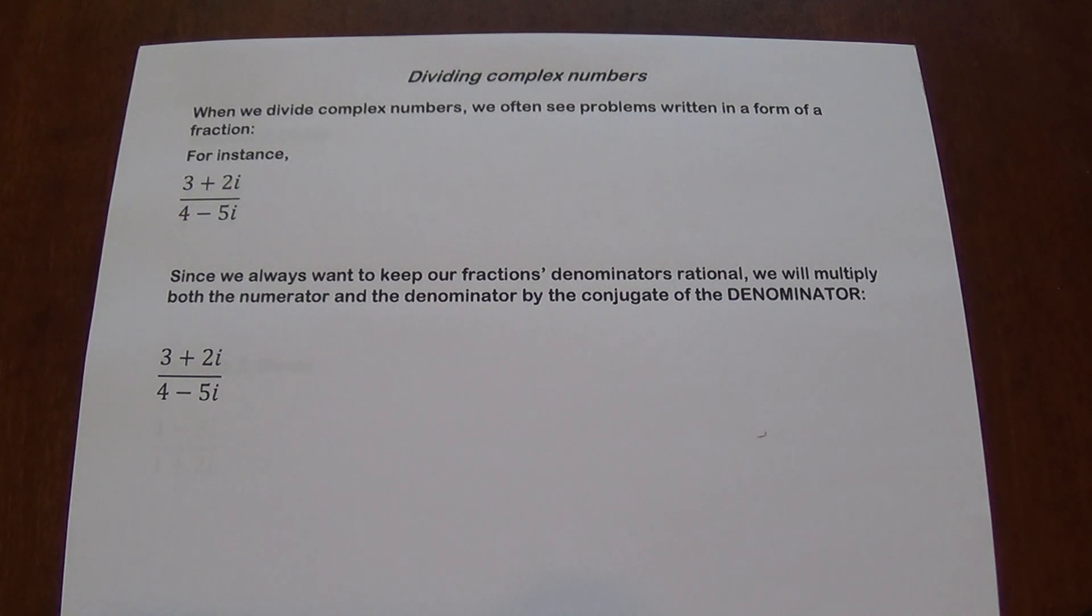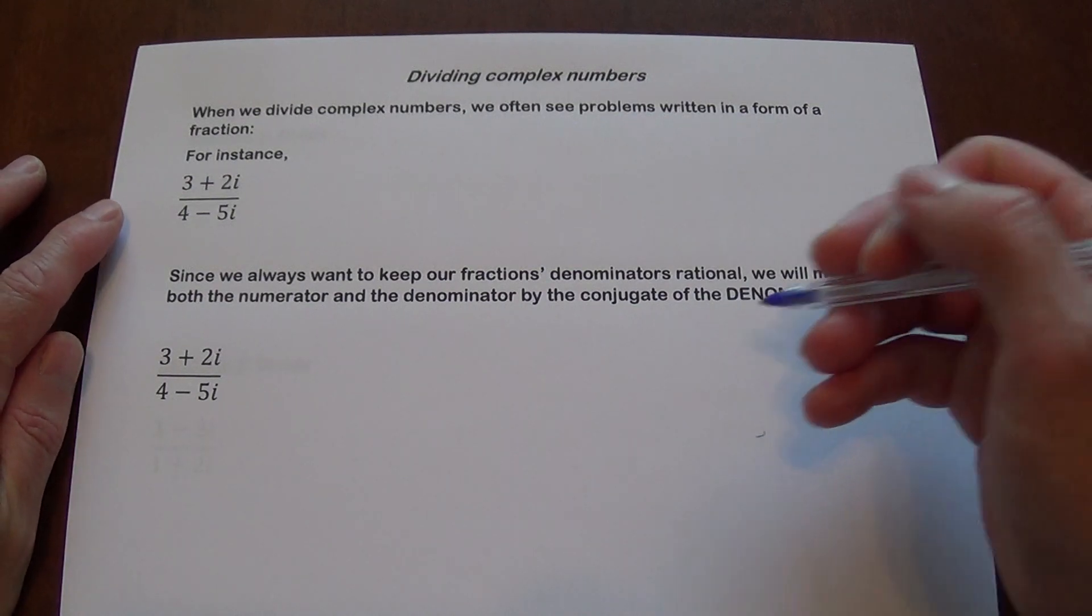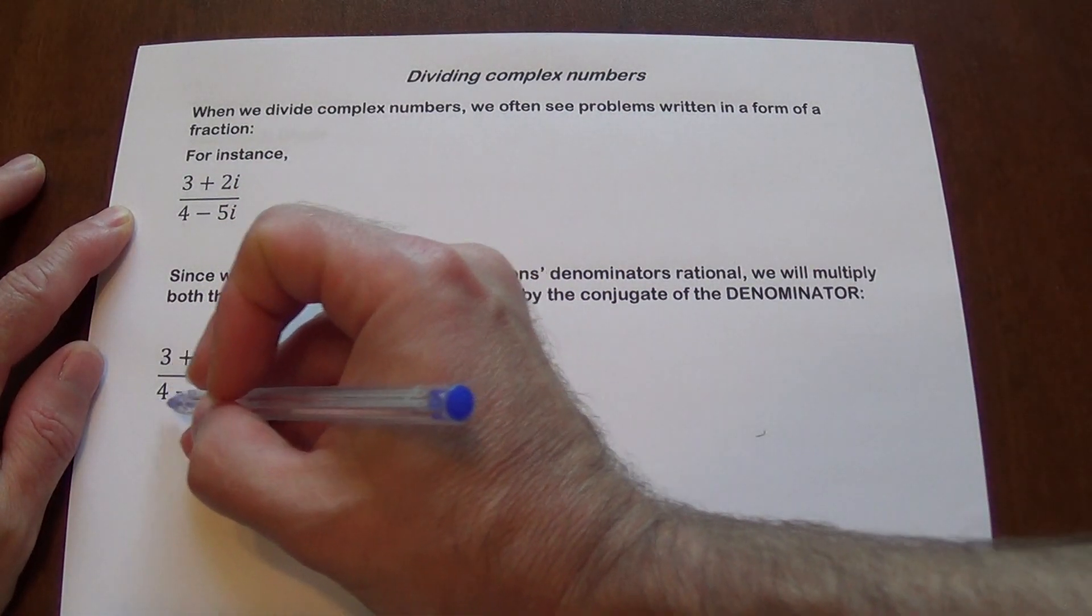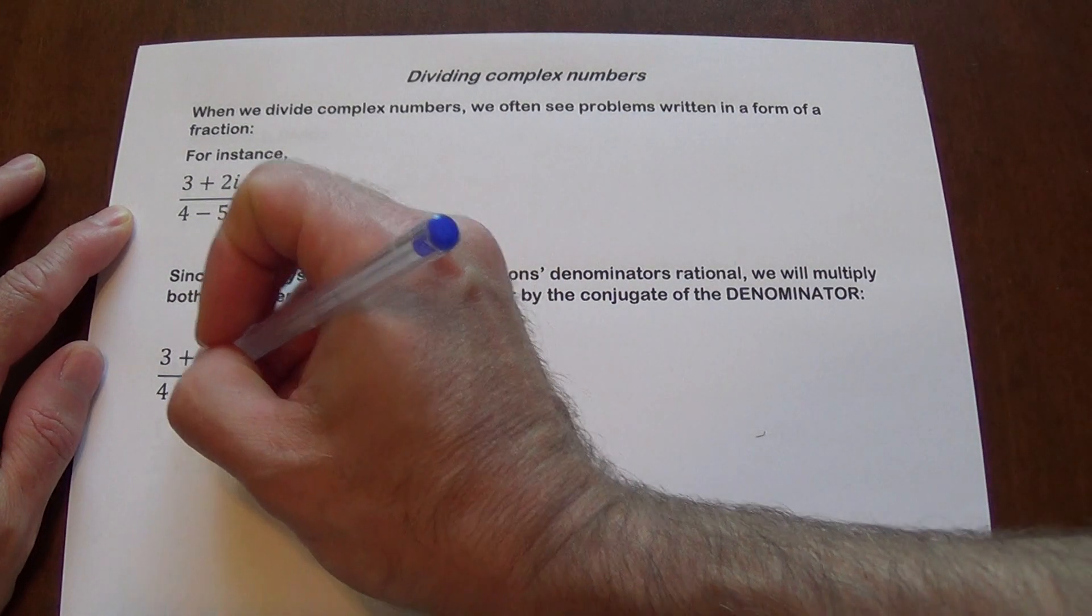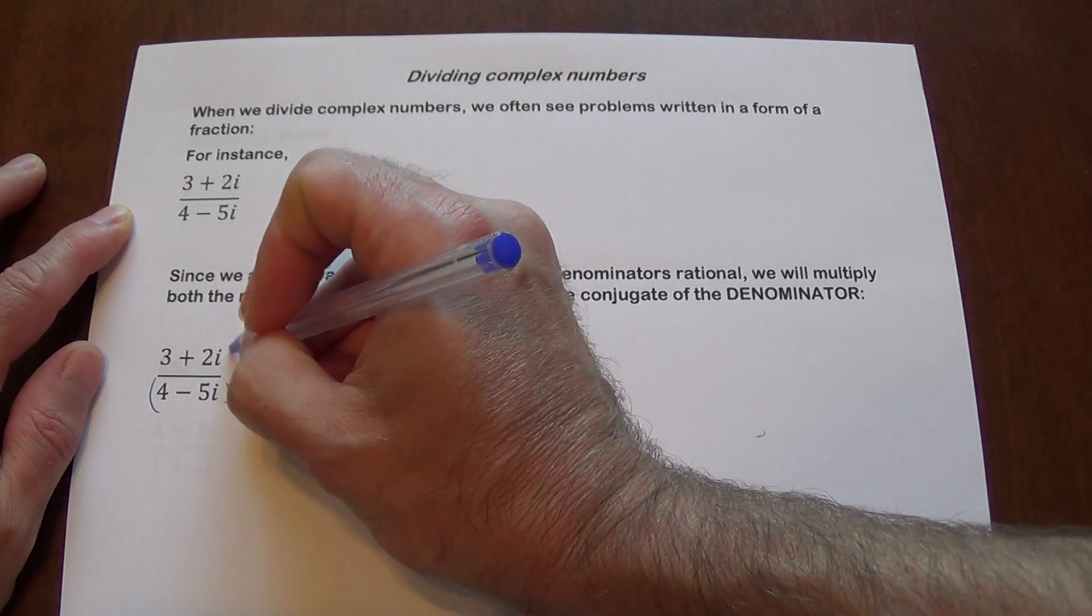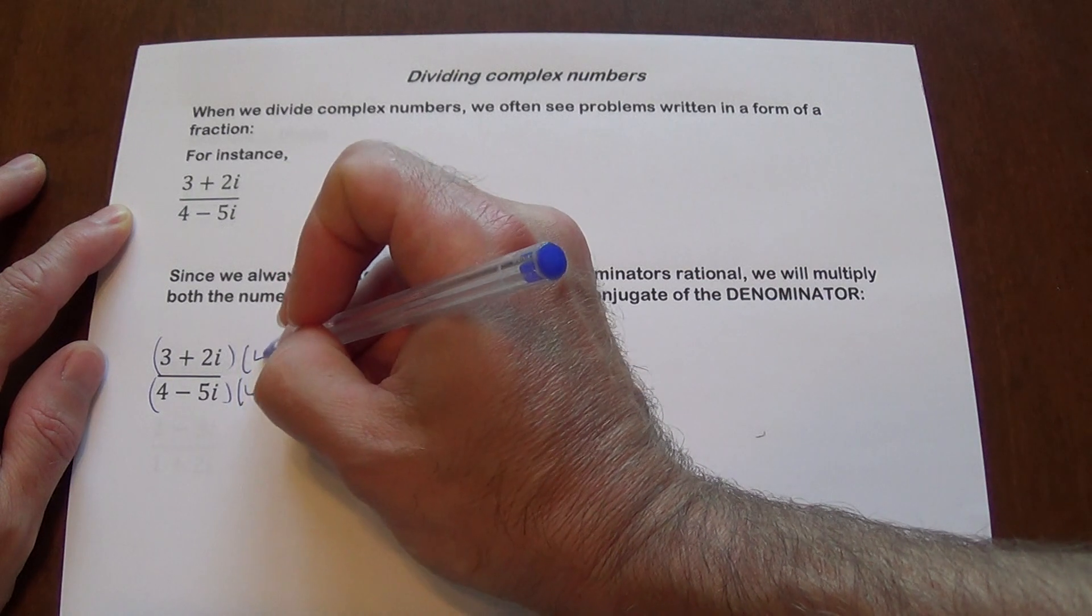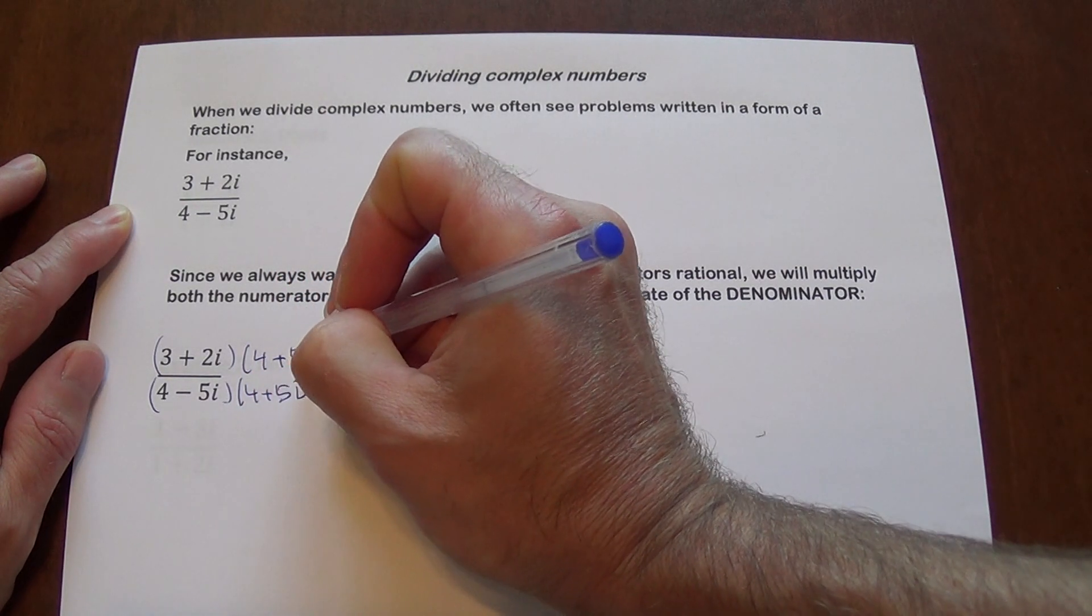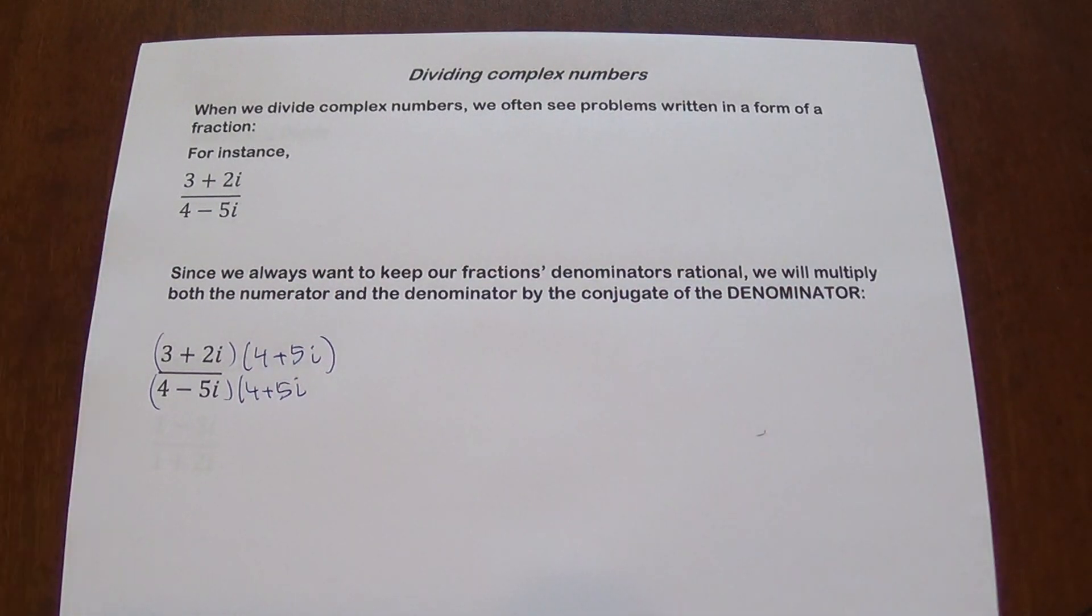So what we are going to do, because we are always going to be interested in not having anything irrational and definitely not imaginary on the bottom, is we multiply the top and the bottom, the numerator and the denominator, by the conjugate. So the denominator is 4 minus 5i, we're going to multiply it by 4 plus 5i. And whatever we multiply the denominator by, we are going to multiply by the same quantity the numerator.